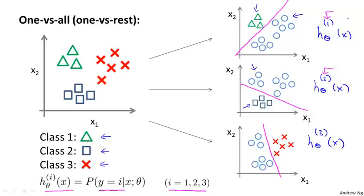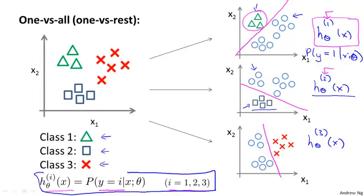So in the first instance, for this first one up here, this classifier was learning to recognize the triangles. So it's thinking of the triangles as a positive class. So h superscript 1 is essentially trying to estimate what is the probability that the y is equal to 1, given x and parameterized by theta. And similarly, this is treating the square class as a positive class, and so it's trying to estimate the probability that y is equal to 2, and so on. So we now have three classifiers, each of which was trained to recognize one of the three classes.